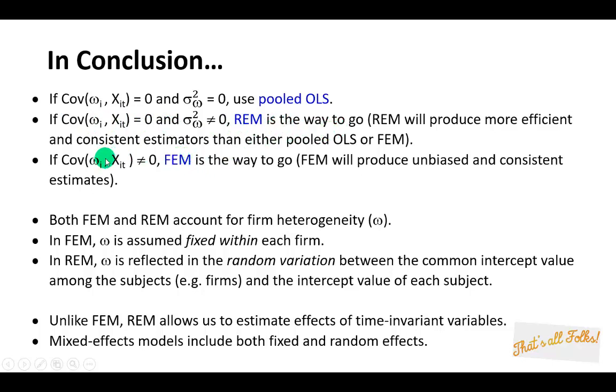Now then, if the covariance between the cross-section random error term, the heterogeneity term, and the regressors is not zero, then we're going to have to estimate the panel model using the fixed effects model because we can be sure that it'll give us unbiased and more importantly consistent parameter estimates.